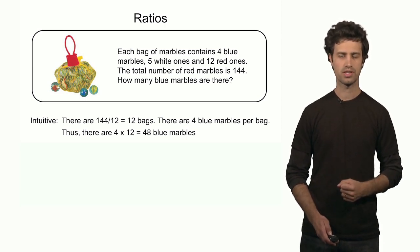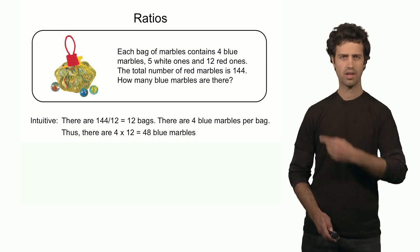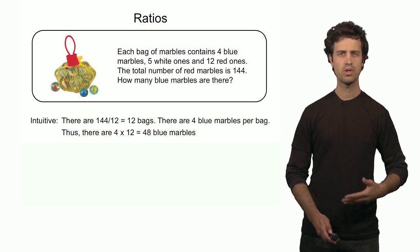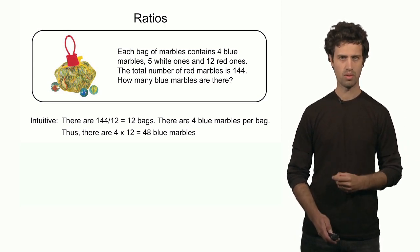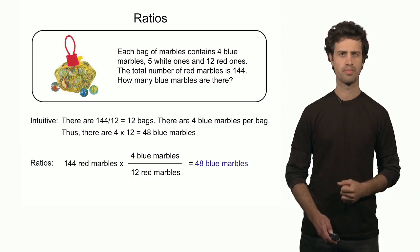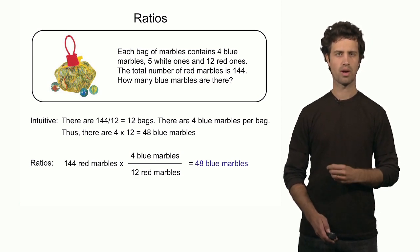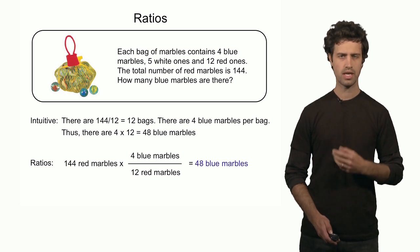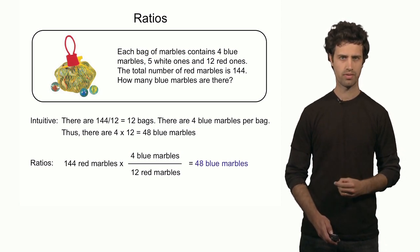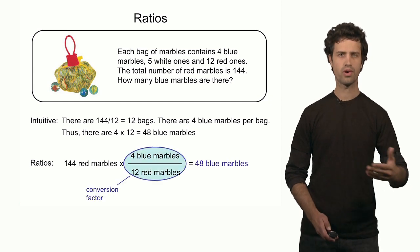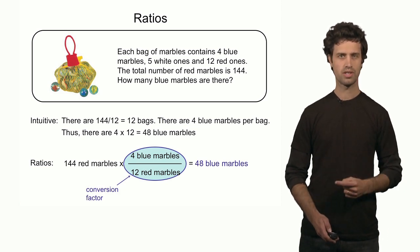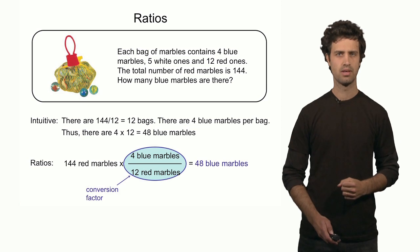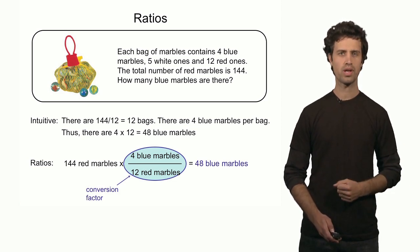So there are 48 blue marbles, and this answer is indeed correct. But instead of doing it in this intuitive fashion, we can do it in a fashion that considers the ratios between the red and the blue marbles. This problem really is a conversion problem. I can convert the number of red marbles, 144, into the number of blue marbles by considering the ratio between the two. The ratio is 4 blue marbles for each 12 red marbles — this is the conversion factor. It converts the unit of red marbles into the unit of blue marbles. Note that the unit of red marbles will be striking out. Completing this calculation, we find again 48 marbles.